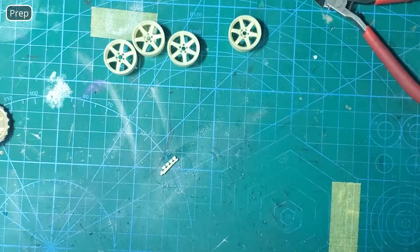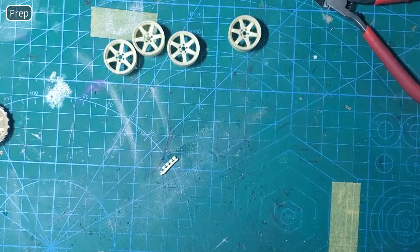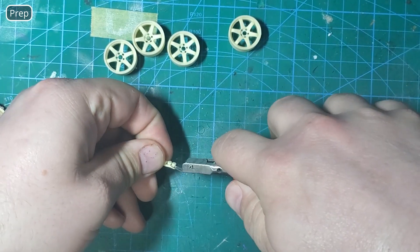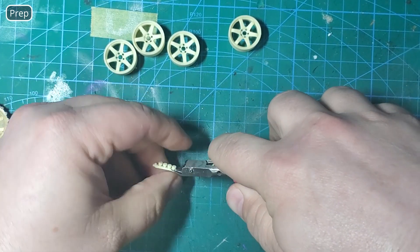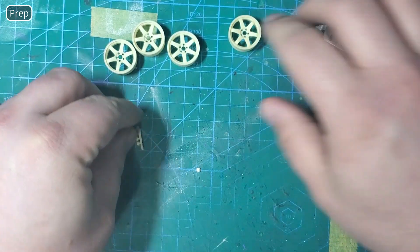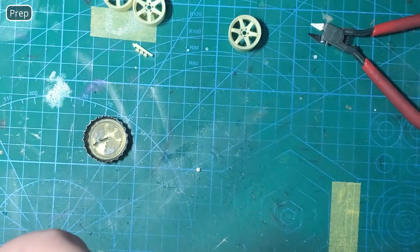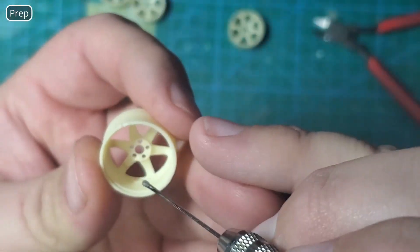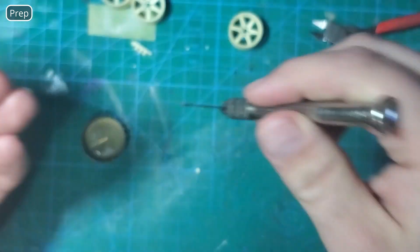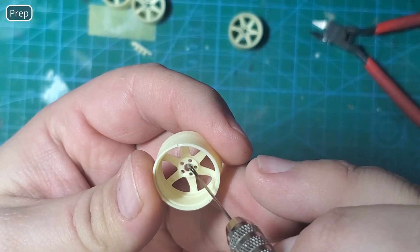For the wheels we're going to start with these center caps. You can paint them separately and put them on afterwards, it may even be easier, but I feel I'm going to get a better fit and finish since I'm painting them the same color if I go ahead and put them in now and paint them all together. I'm just going to put a little bit of super glue on the center ring, don't get it where the lug nuts go, and then very carefully set these in place with some tweezers.